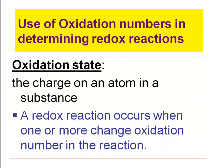When oxidation and reduction reactions occur, you're going to need to know how to use oxidation numbers when determining what has been oxidized and what has been reduced. We need to really look at oxidation state — all this is, is the charge on an atom in a substance. A redox reaction occurs when one or more changes in oxidation number appear in a reaction.